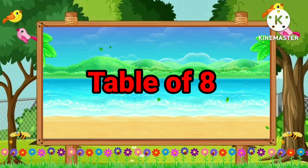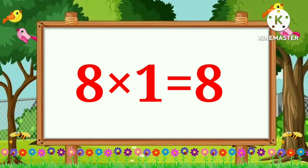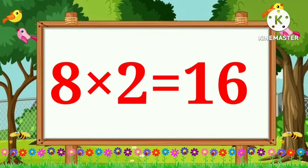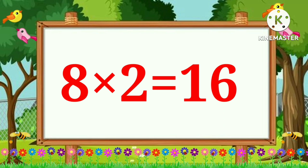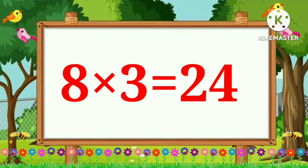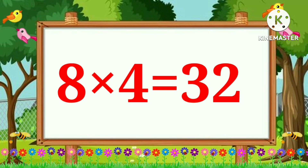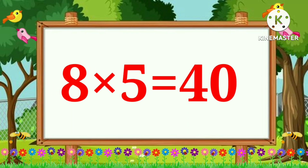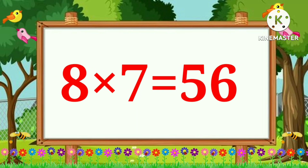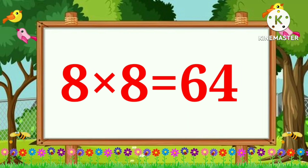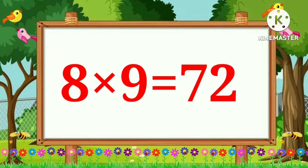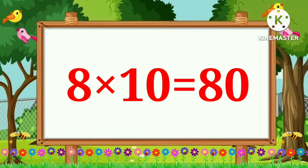Table of Eight. Eight ones are eight. Eight twos are sixteen. Eight threes are twenty-four. Eight fours are thirty-two. Eight fives are forty. Eight sixes are forty-eight. Eight sevens are fifty-six. Eight eights are sixty-four. Eight nines are seventy-two. Eight tens are eighty.